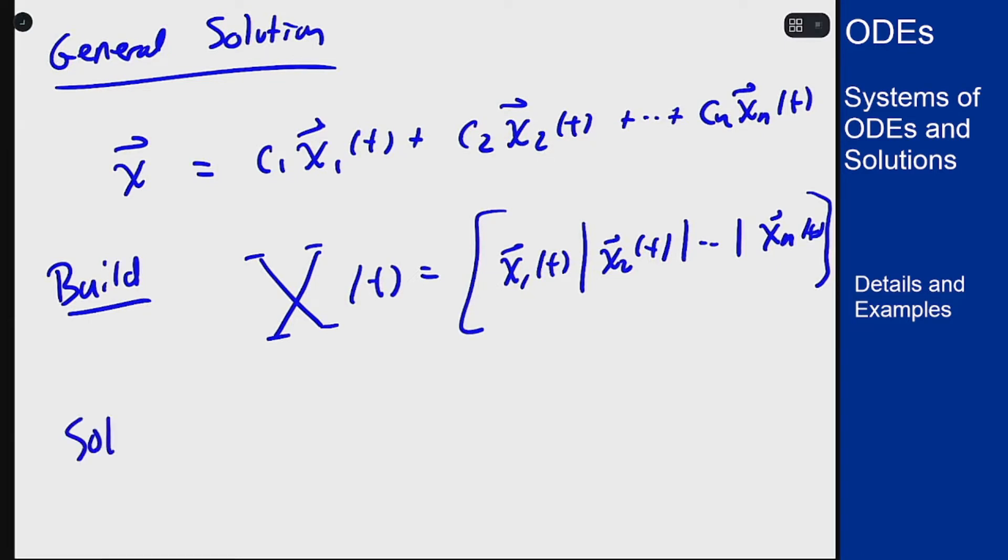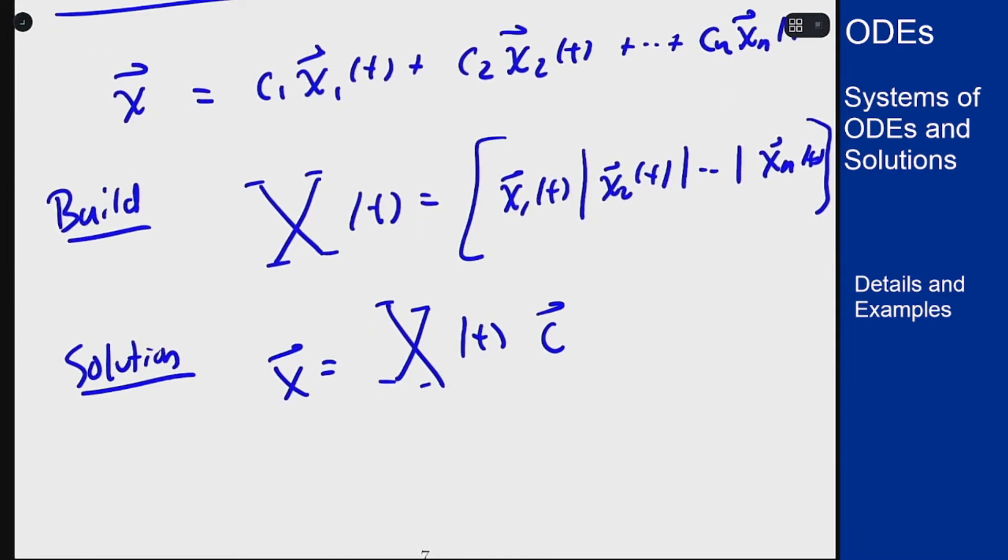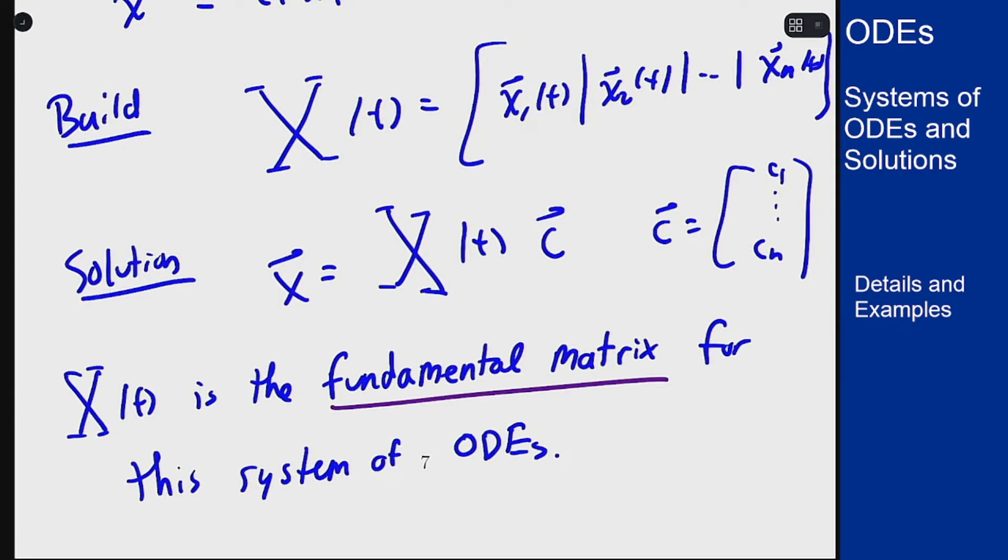The solution is then vector x (little vector x) is capital X matrix times this vector c of unknown constants, where c is the vector c1 up through cn, because that's how multiplication works. Now this matrix here, X of t, is called the fundamental matrix for the system of differential equations, and we phrase it this way because it gives us the setup for a general solution.